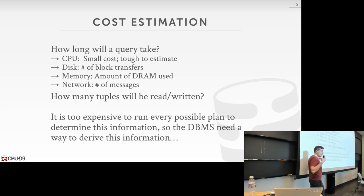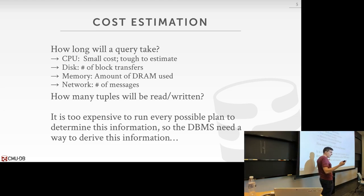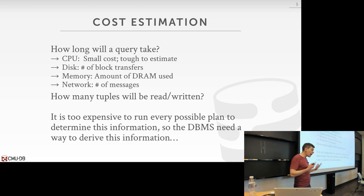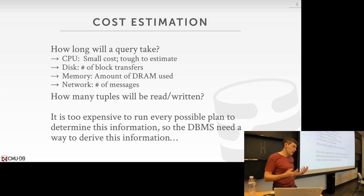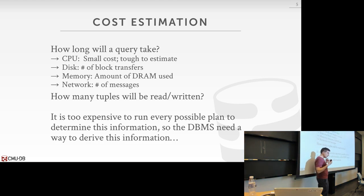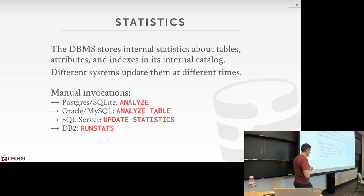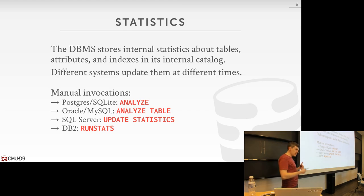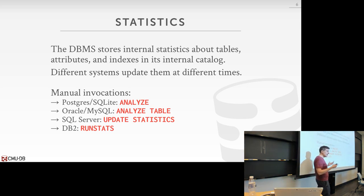The most accurate way to estimate a query plan's cost is to actually execute it. But if we're looking at thousands of different possible query plans, we can't execute every single one, so we need a way to approximate this — that's what our cost model does. The underlying component we're going to use is the internal statistics catalog of the database system. Every database system that has a cost-based query optimizer is going to have this statistics module, which collects information about what the tables look like and what's inside the tuples.